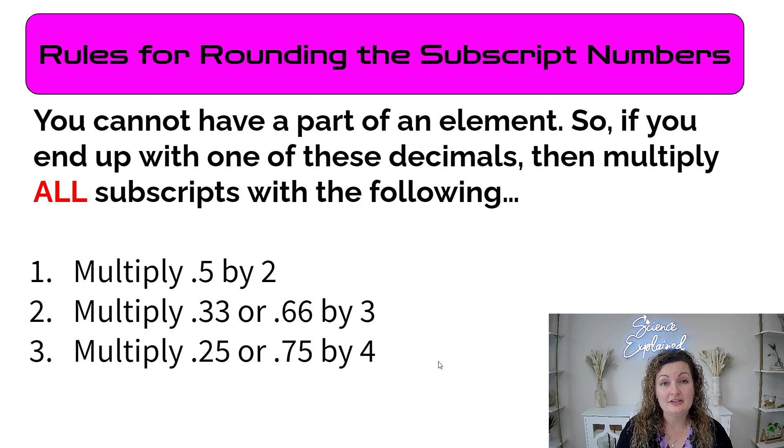Now let's go over those rounding rules. If I were to get an answer that had a decimal, I cannot have a part of an atom. So I can't have like half of an atom or 0.5 of an atom. So we have to round this to get to whole numbers so we have whole atoms. So here's your rounding rules. If you end up with an answer that has a 0.5, you have to multiply all your answers by 2. If you end up with an answer with 0.33 or 0.66, you have to multiply all your answers by 3. And if you end up with 0.25 or 0.75, you have to multiply all your answers by 4.